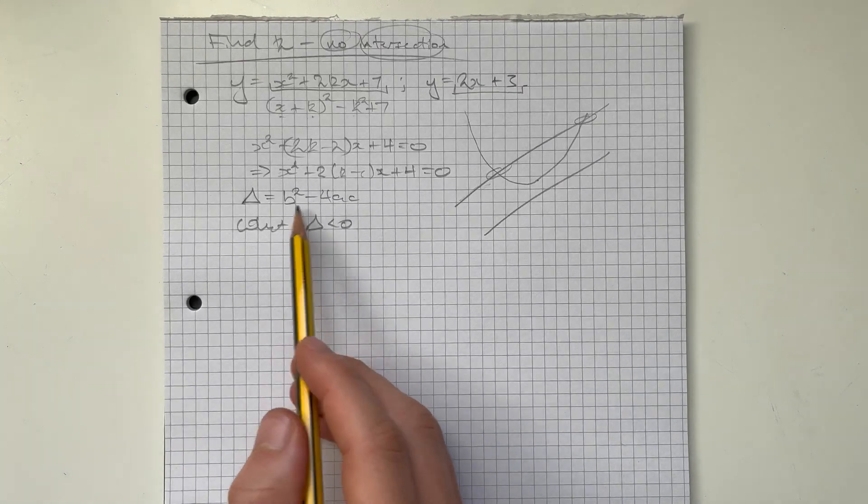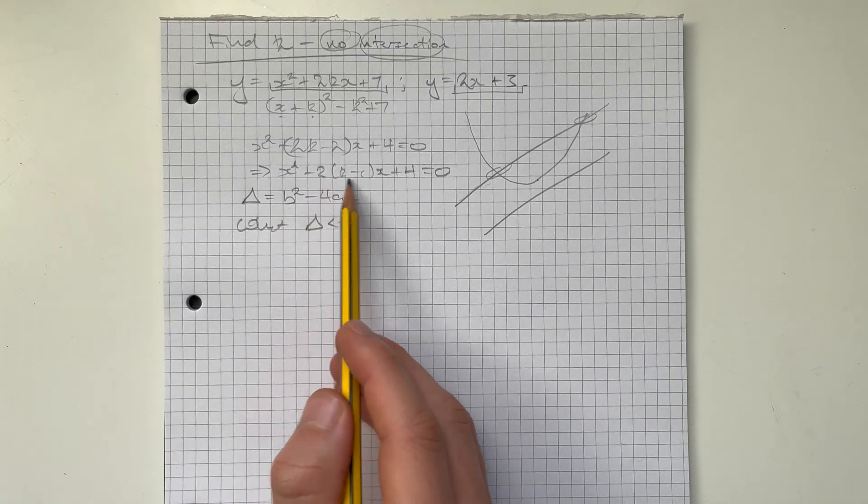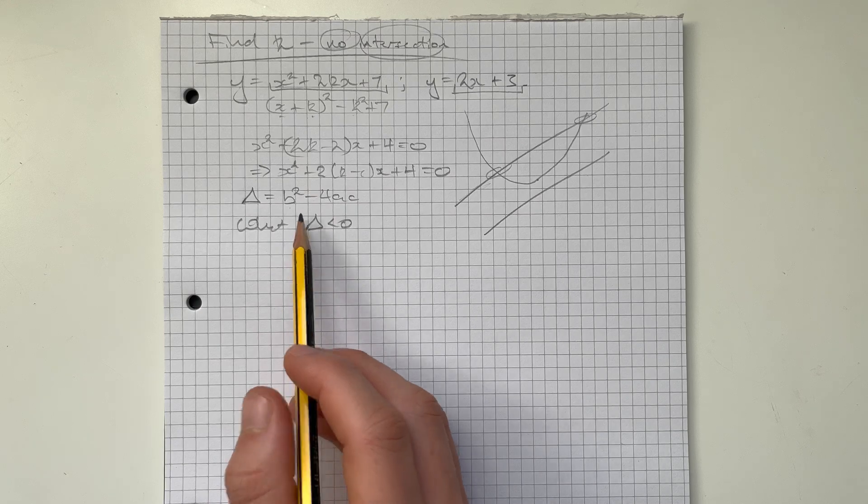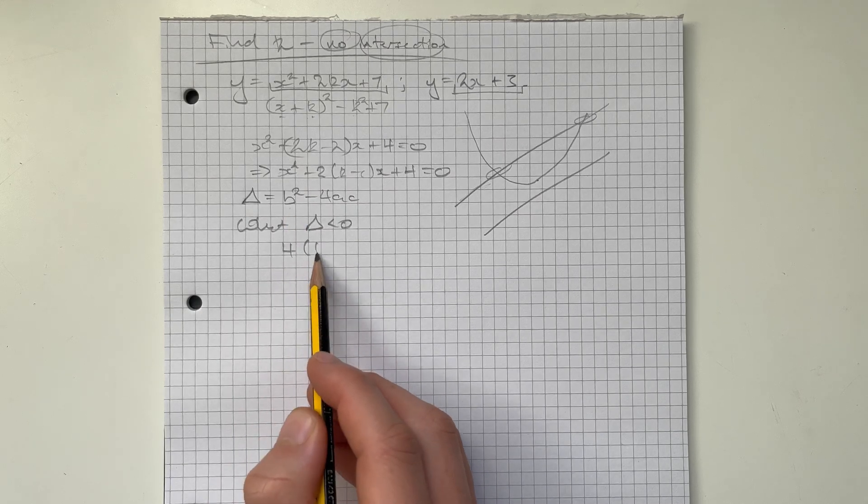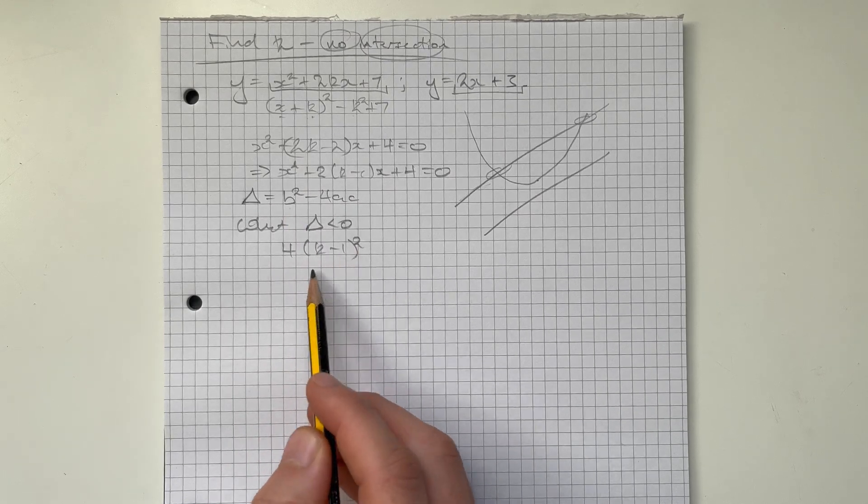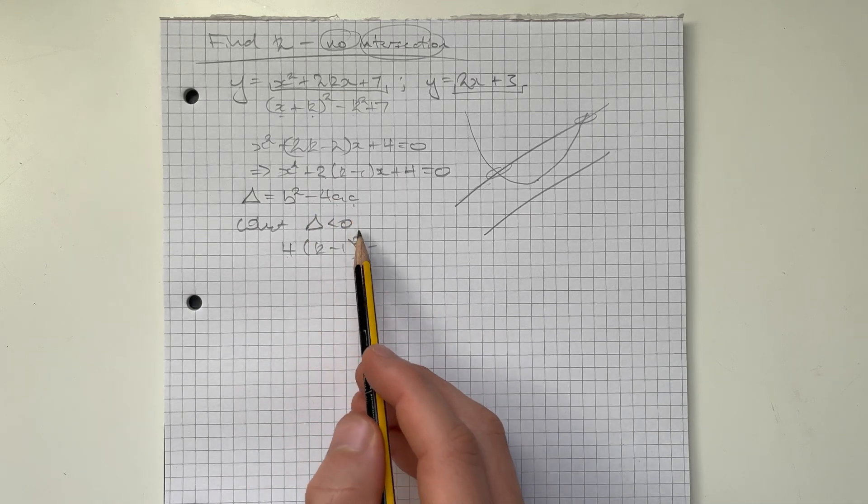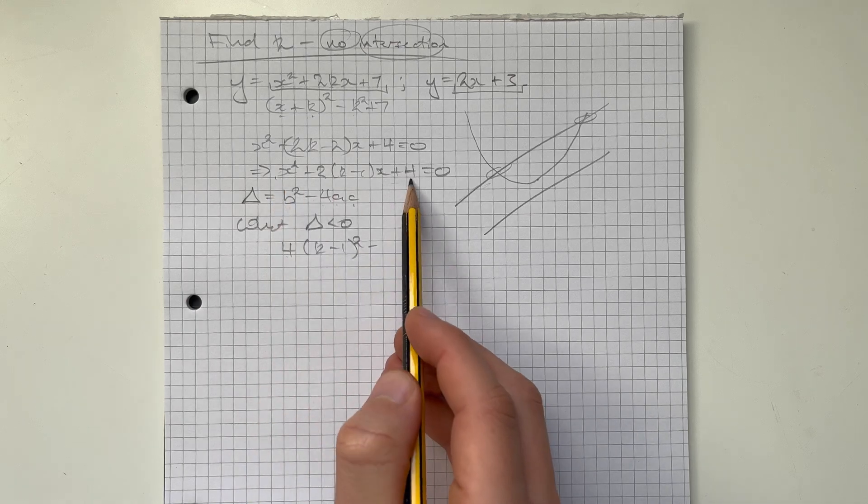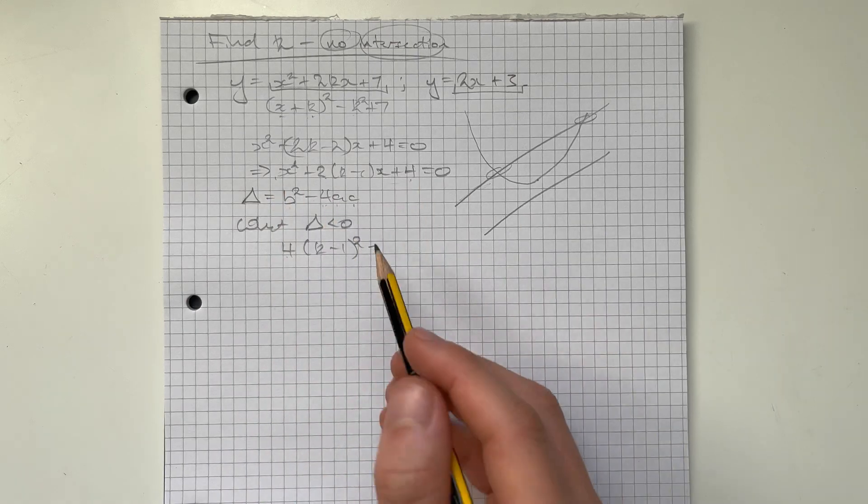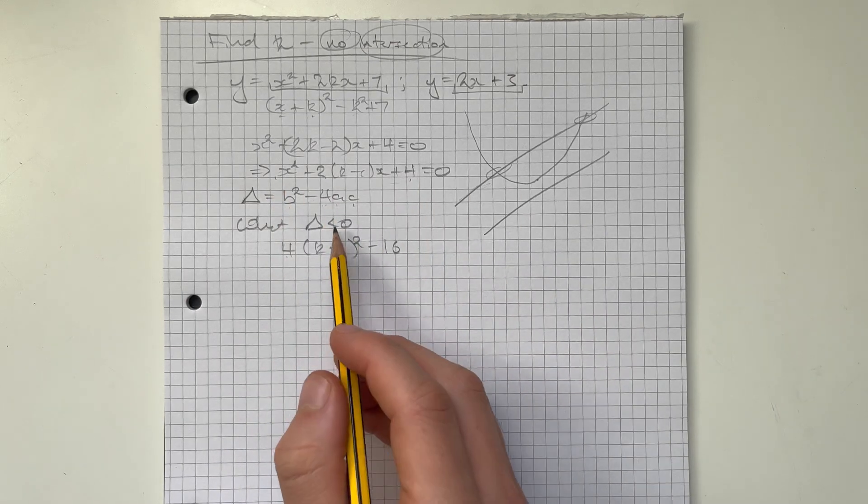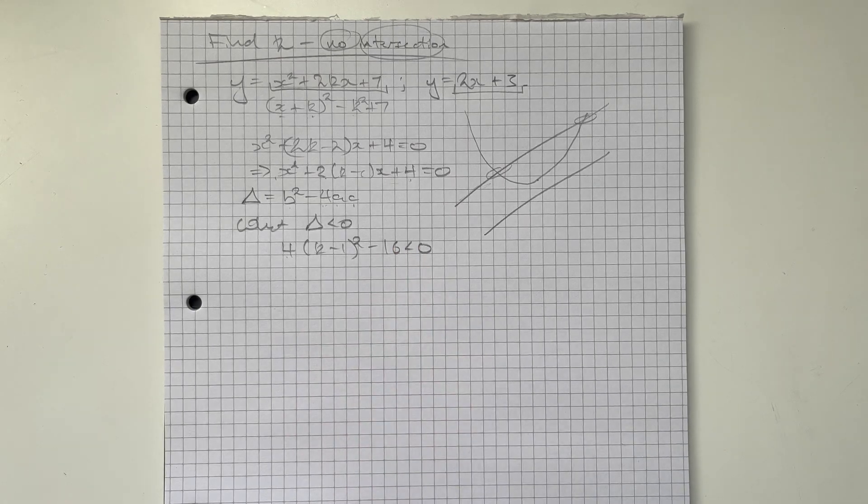So let's fill in what this is. b squared is going to be our 2k minus 1. So when that's squared, that's 4 lots of k minus 1 squared. So the 4 comes from the 2 being squared. Take away then 4 times a times c. Well a is 1, c is 4, so it's 4 times 4, which is 16. And we want that thing to be less than 0.